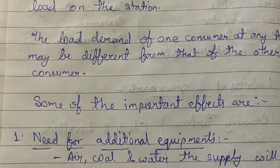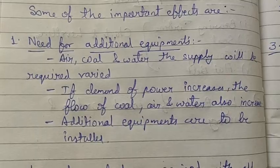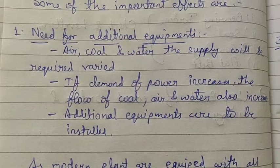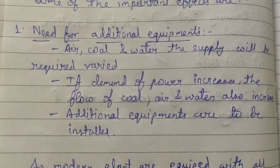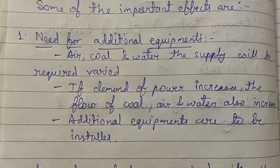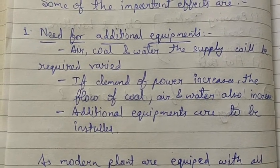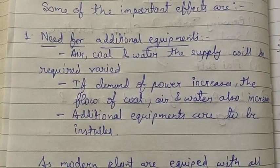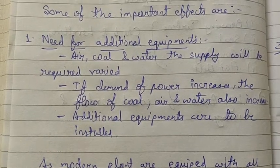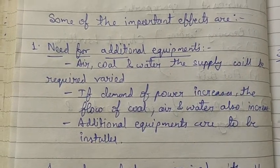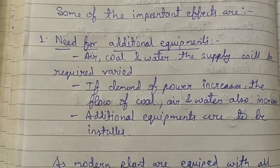There is a need for additional equipment. When the plant load varies, the most basic things — air, coal, and water — will also vary. If the load is increased, these supplies will increase. If demand increases, supply and storage must increase accordingly. These additional equipments are required to handle variable load variation in production.